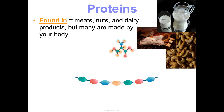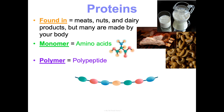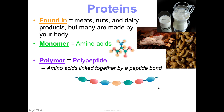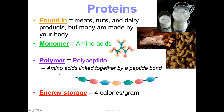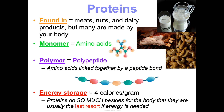Where do we find proteins? Meat, nuts, and dairy products — but many proteins are also made by your body, not just from food we eat. Their monomer is amino acids — there are 20 different ones. Those amino acids get linked together by peptide bonds, forming a polypeptide, which is a chain of amino acids. Energy storage is four calories per gram, the same as carbohydrates. But just because they have the same energy per gram as carbs doesn't mean we want to break them down for energy — they do so many things that we use them as a last resort.